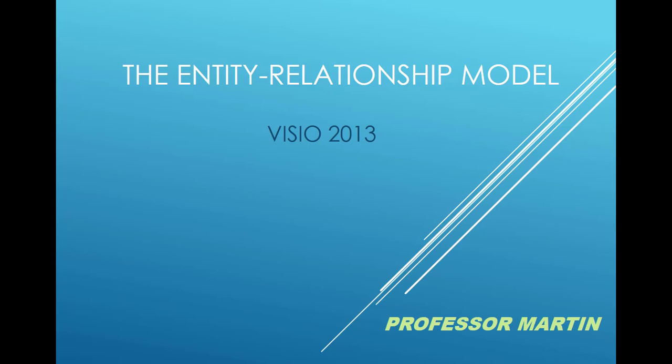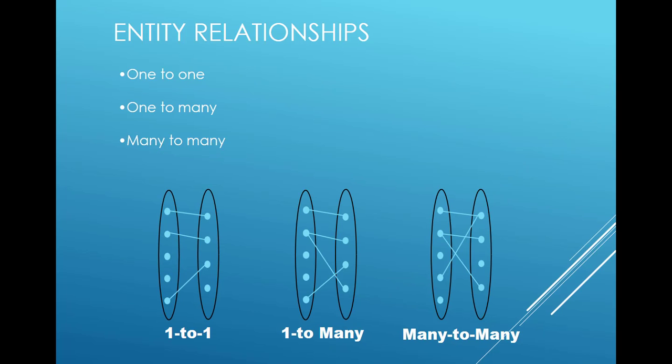Now that we have our entities and their attributes, we need more than just one entity for a database. We are going to create more entities, and we need to make sure the entities relate to one another so we're not just creating entities that have nothing to do with the overall scope of our database. There are different types of relationships that exist between entities. We have three different kinds: one-to-one, one-to-many, and many-to-many.